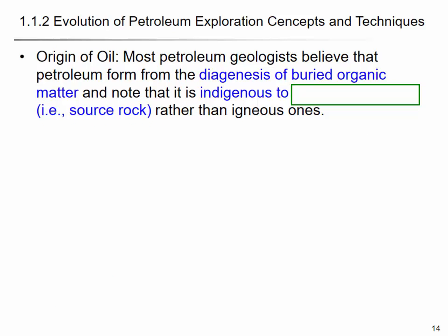The origin of oil: most petroleum geologists believe that petroleum oil formed from the diagenesis of buried organic matter, and it is indigenous to sedimentary rock rather than igneous rock. So you first need to find a sedimentary basin, then you can find the source rock — the rock that produced the oil. In that rock, organic carbon was turned into hydrocarbon, which can then migrate to other traps or reservoirs.